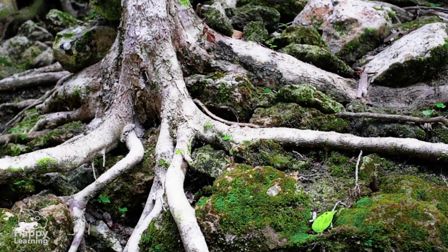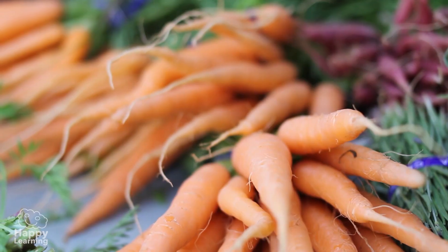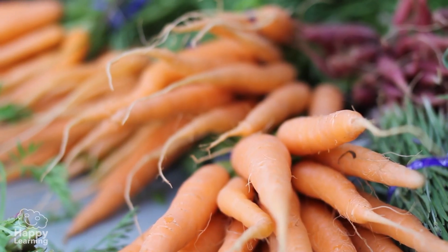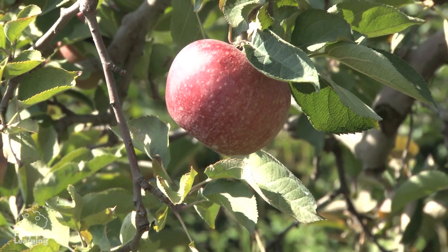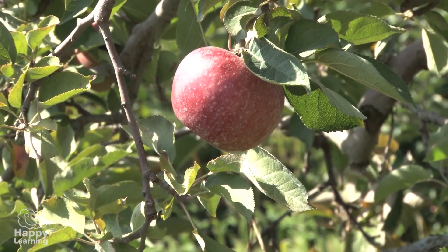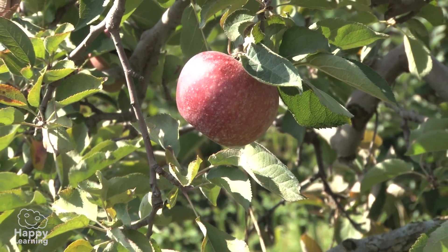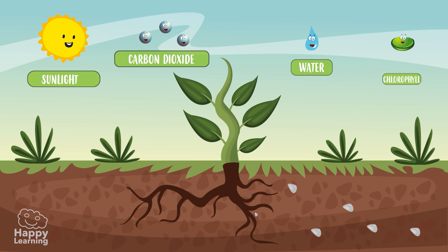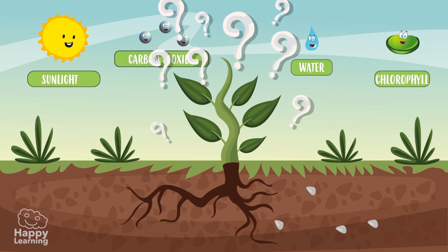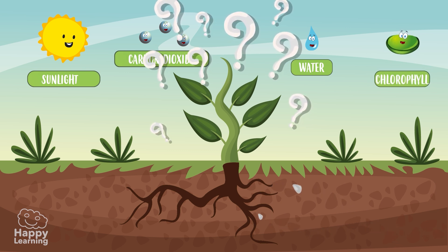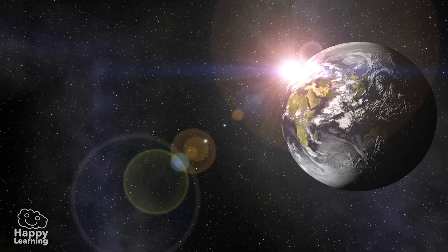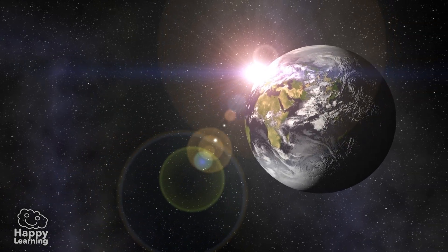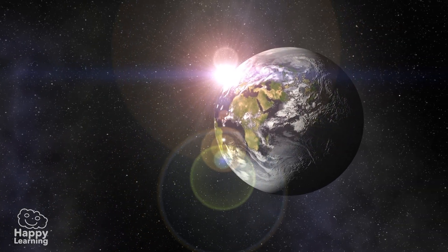Elaborated sap circulates around the plant and works as food. All plants feed from elaborated sap, and they store it in their roots — like a carrot — or in their fruits, like an apple or a pear.